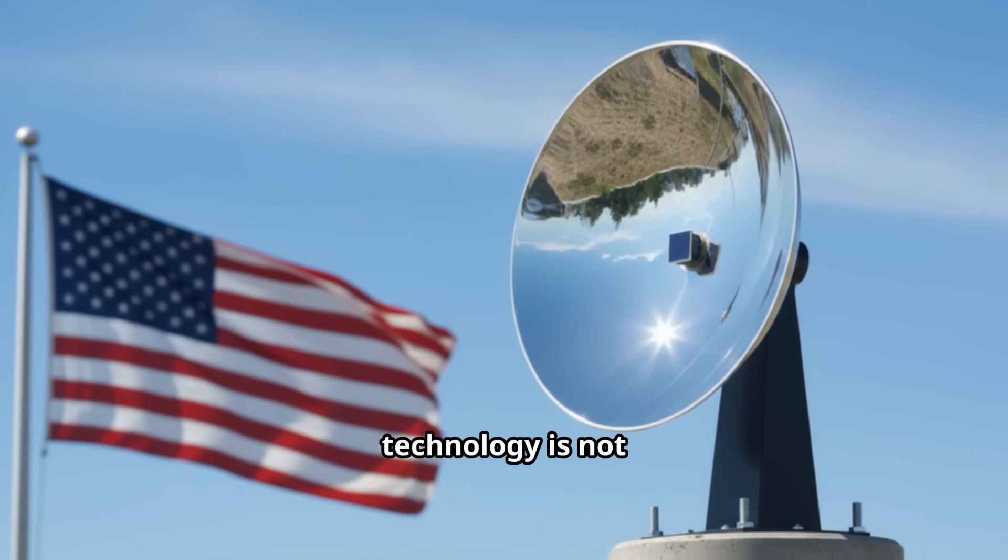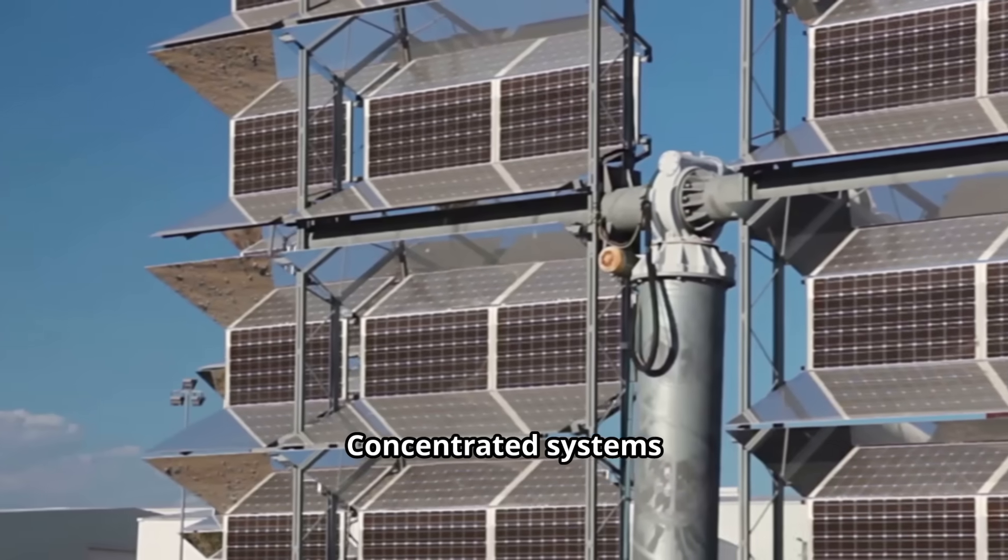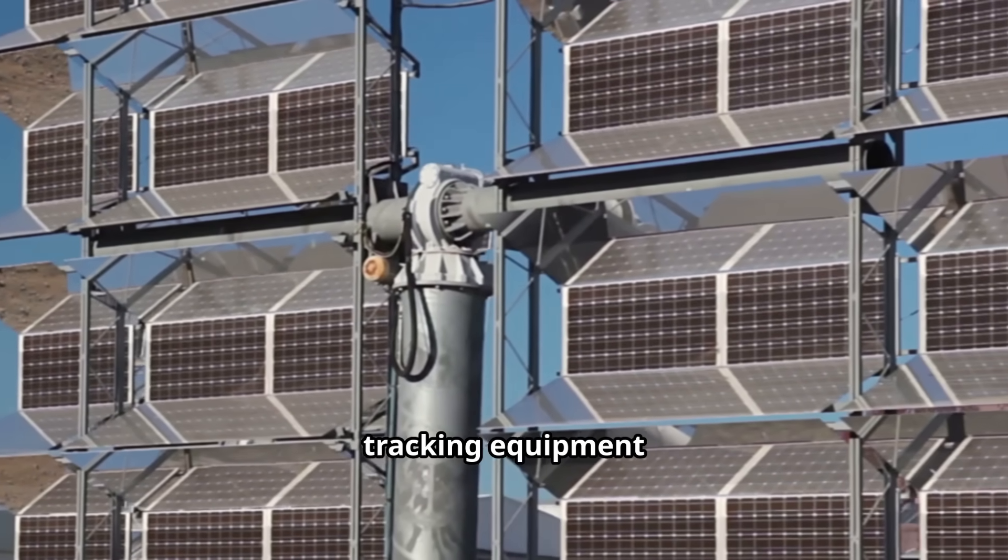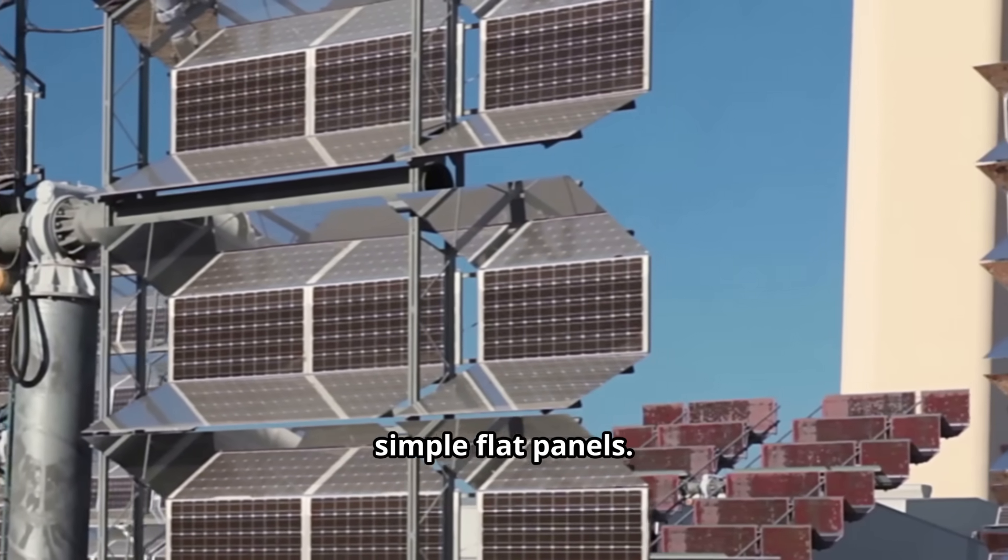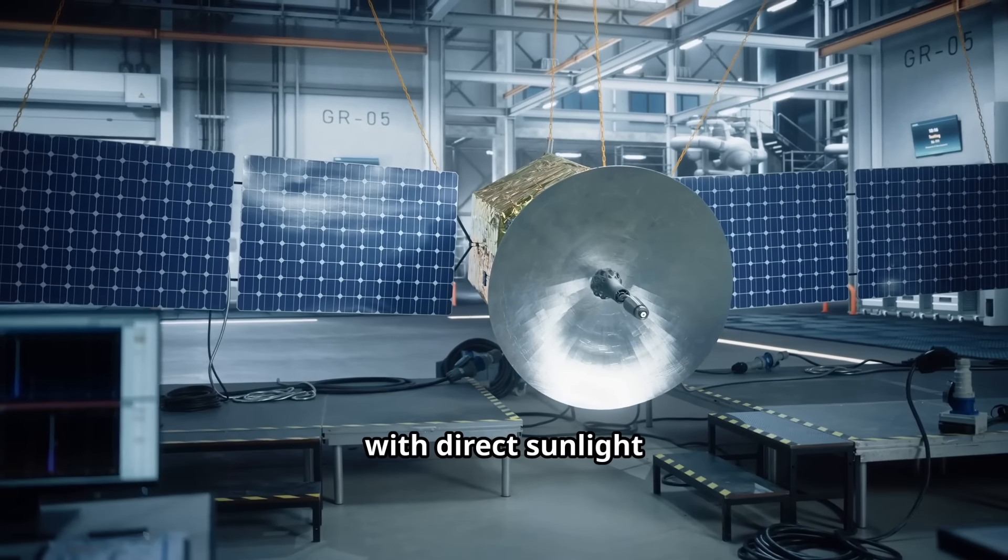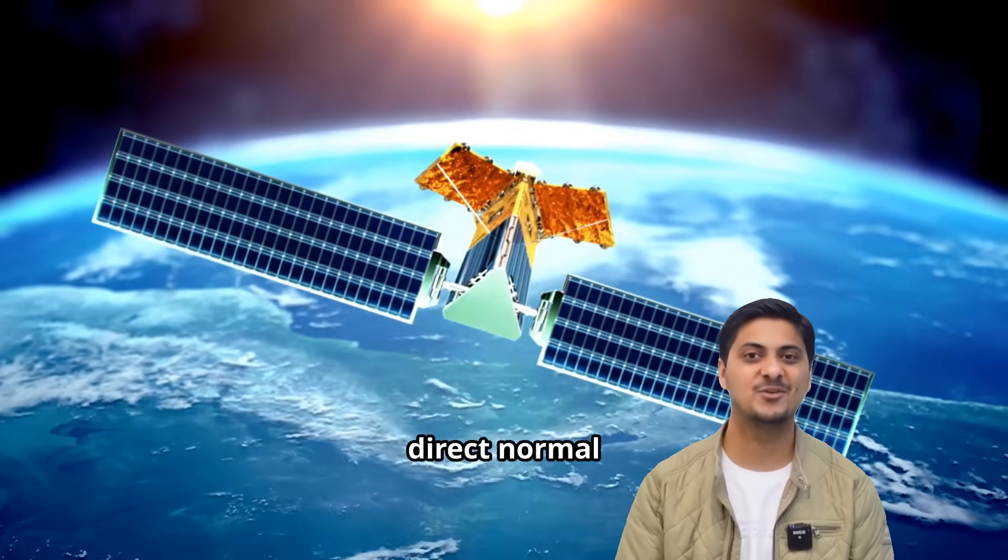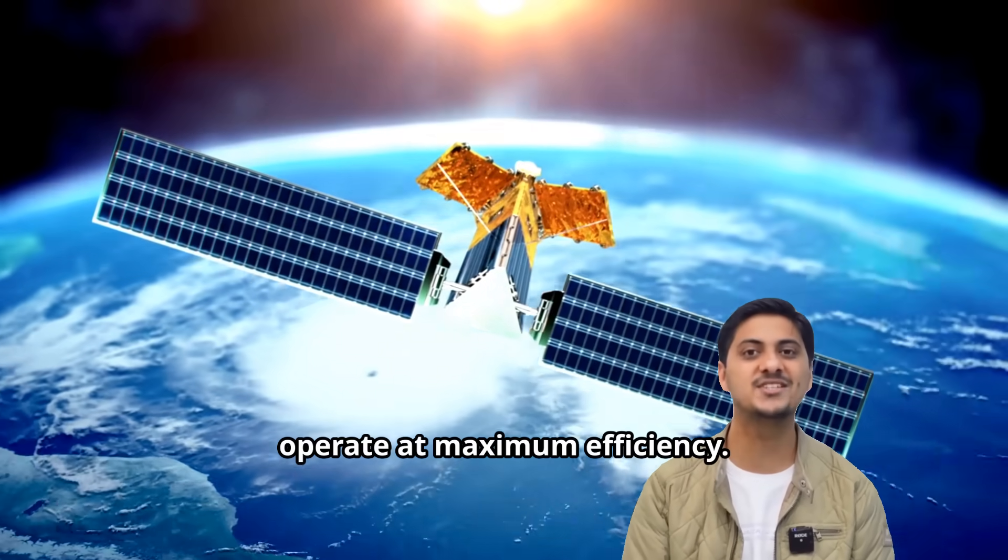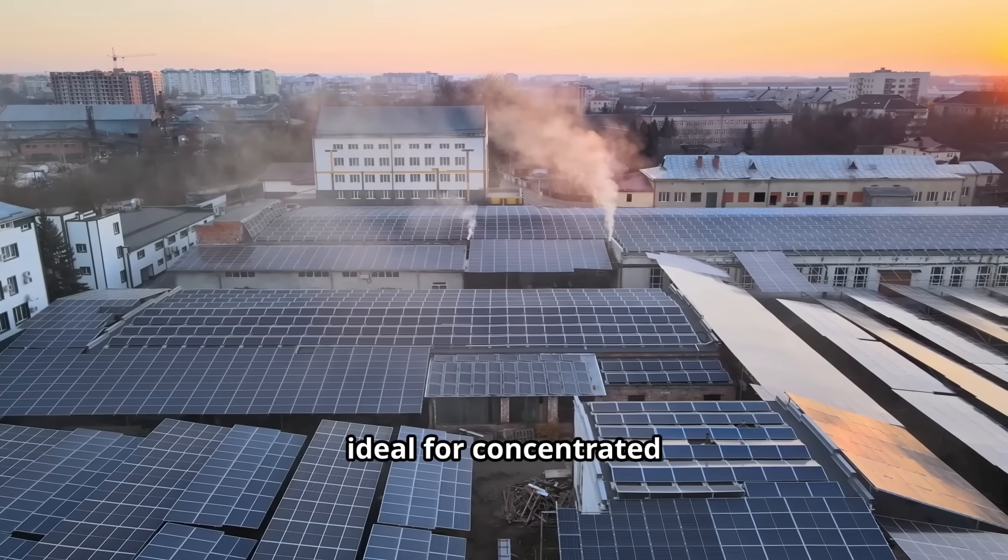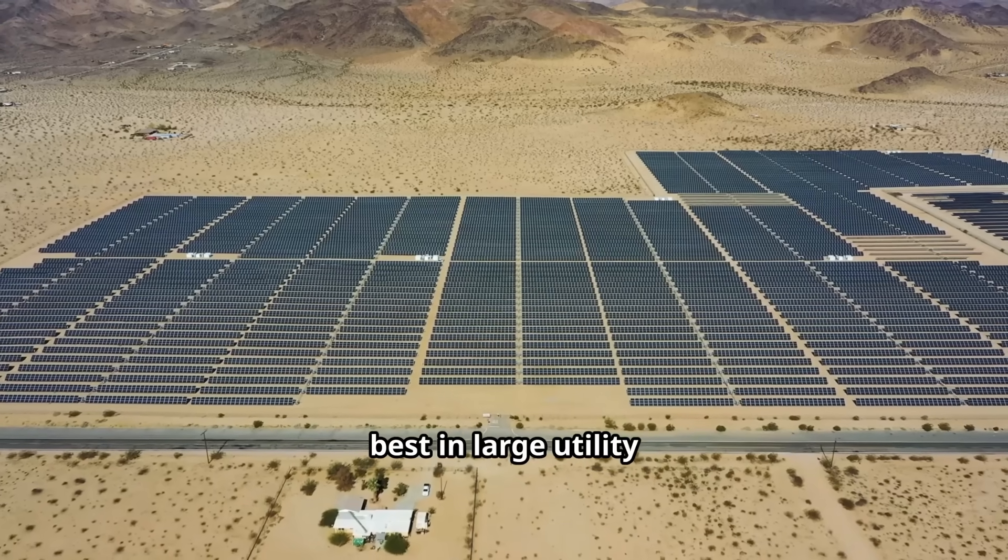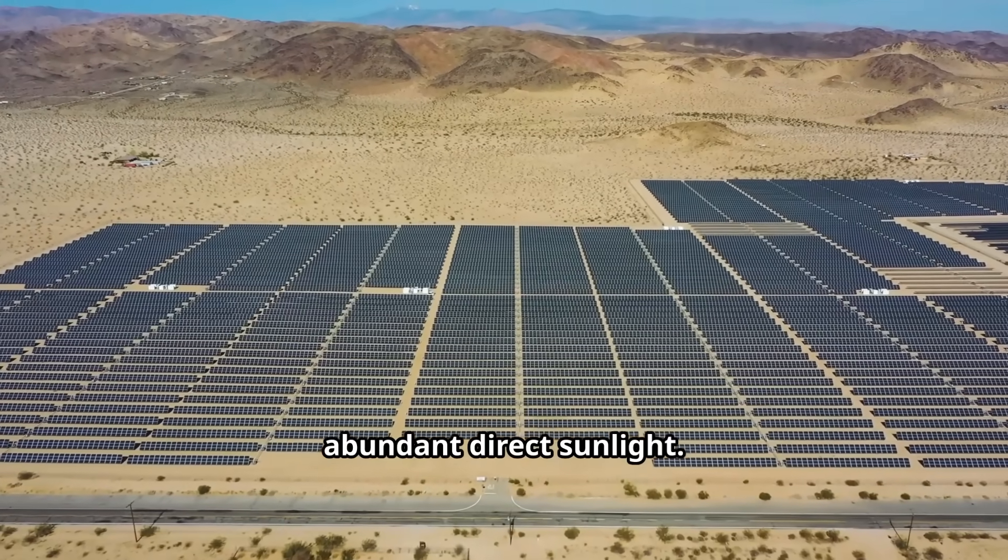This is why concentrated photovoltaic technology is not suitable for typical residential rooftop installations. Concentrated systems require complex tracking equipment, precise optics, and robust cooling mechanisms unlike simple flat panels. CPV systems only work with direct sunlight and cannot utilize diffuse light from clouds. They require high direct normal irradiance levels to operate at maximum efficiency. Urban environments with pollution, haze, and shading are not ideal for concentrated photovoltaic systems. These systems work best in large utility-scale installations in desert regions with abundant direct sunlight.